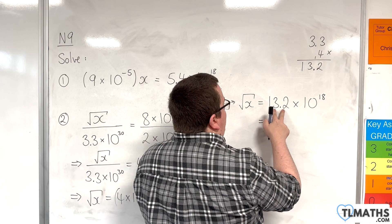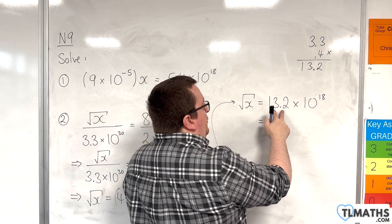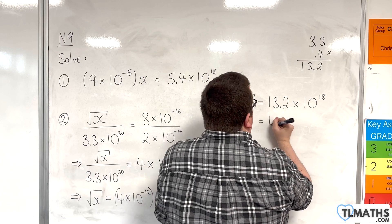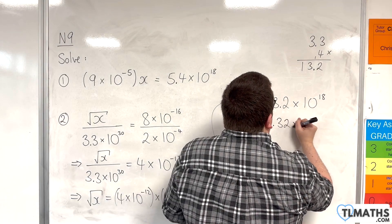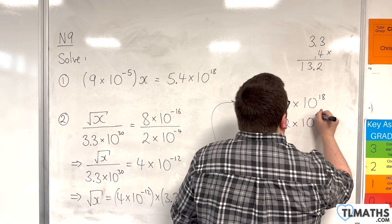So, in standard form, I need to make sure that this number is greater than equal to 1 but less than 10. So, I'm going to divide it by 10 to get me 1.32. If I've divided that by 10, I need to multiply that by 10. So, this would be 10 to the 19.